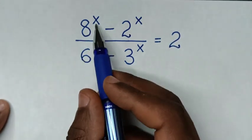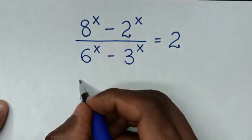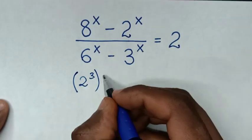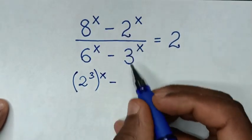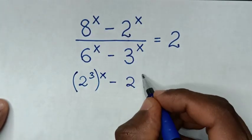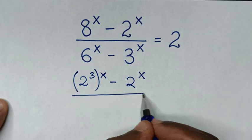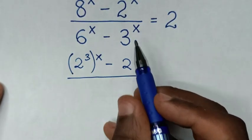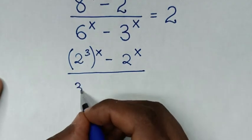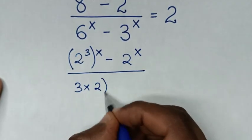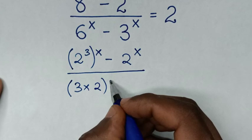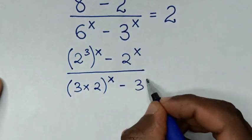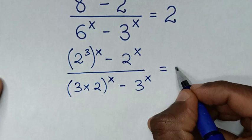First, 8^x — since 8 is the same as 2^3, we rewrite it as (2^3)^x. Then for the denominator, 6^x — since 6 is the same as 3 times 2, we rewrite it as (3×2)^x. So we have (2^3)^x minus 2^x over (3×2)^x minus 3^x equals 2.